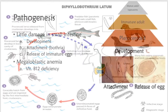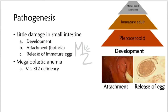Pathogenesis: infection by Diphyllobothrium latum (diphyllobothriasis) causes little damage in the small intestine, but this damage has three stages. First, development: the plerocercoid larvae develops into an immature adult, then into a mature adult tapeworm. Second, attachment: the worm attaches to the wall of the intestine using the bothria (slit-like grooves). Third, release of immature eggs by the gravid proglottids in the feces. In some individuals, megaloblastic anemia occurs as a result of vitamin B12 deficiency caused by preferential uptake of the vitamin by the worm.